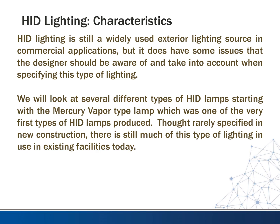HID lighting is still a widely used exterior lighting source in commercial applications, but it does have some issues that the designer should be aware of and take into account when specifying this type of lighting. We'll look at several different types of HID lamps, starting with the mercury vapor type lamp, which was one of the very first types of HID lamps produced. They're rarely specified in new construction today, though you will run into this type of lighting in existing facilities.